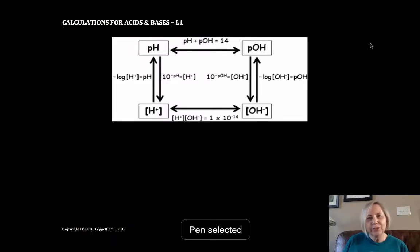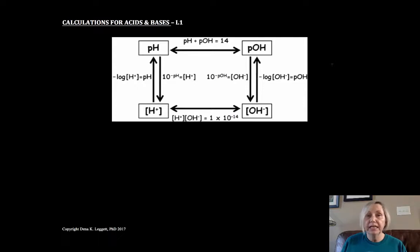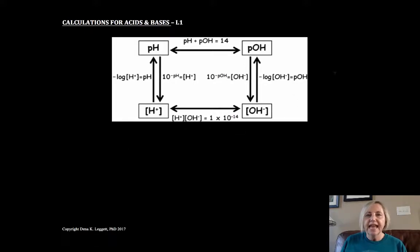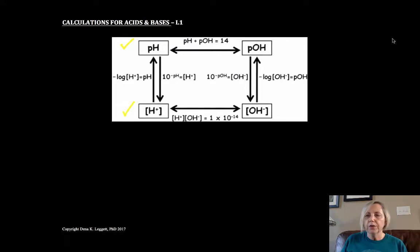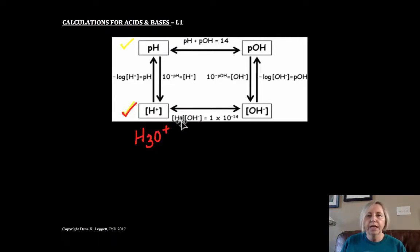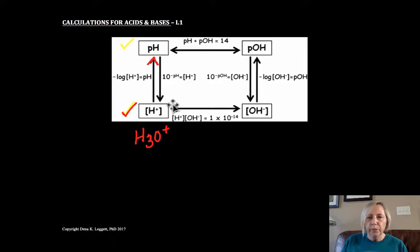Hi, I'm so glad you chose to join me today. In this video segment we're going to be looking at calculations with pH using the hydronium ion and/or the hydroxide ion. I have a little square diagram that lays out the possibilities of where we'll be heading. Starting with H⁺, our proton or hydronium ion — remember that's the same thing as H₃O⁺ — there are a couple of things we can do: we can calculate pH or we can calculate hydroxide.